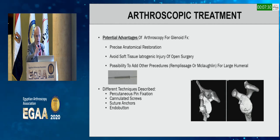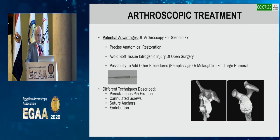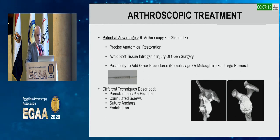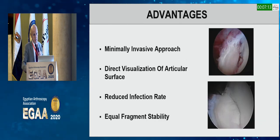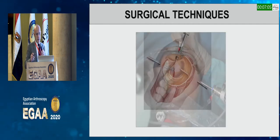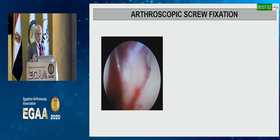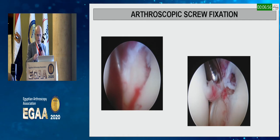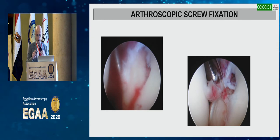The potential advantages of arthroscopic treatment include precise anatomical restoration, avoidance of soft tissue iatrogenic injury, the possibility of adding other procedures like McLaughlin or remplissage, and many different techniques: percutaneous pinning, cannulated screws, suture anchors, and the bone stitcher. The advantages include minimal invasiveness, ability to visualize everything, reduced infection rate, and equal fragment stability.